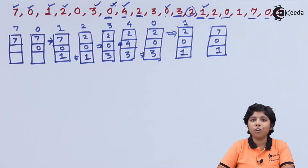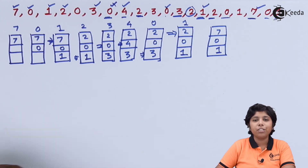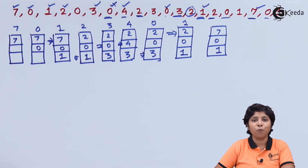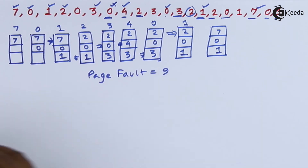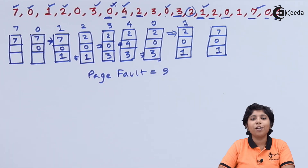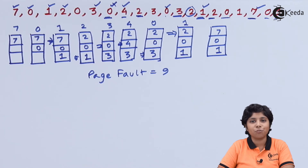Finally, pages 0 and 1 will not cause a page fault. Here we can see that the total number of page faults is only 9, which is less than half the number from FIFO. No other replacement algorithm can produce fewer than 9 page faults for this reference string. So the optimal page replacement algorithm is the best one.